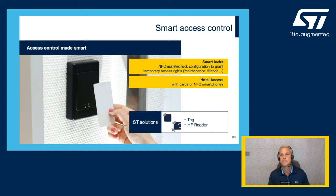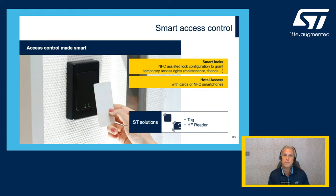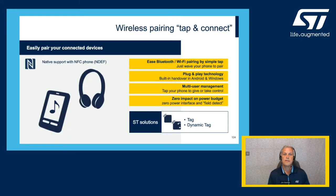Smart access control is another use case. Many of you have been to a hotel and received an NFC-enabled room key — it's much more reliable and less likely to get erased than magnetic stripe cards, especially if placed near your phone. We see this access control applied to rooms, cabinets, medical devices, and more.